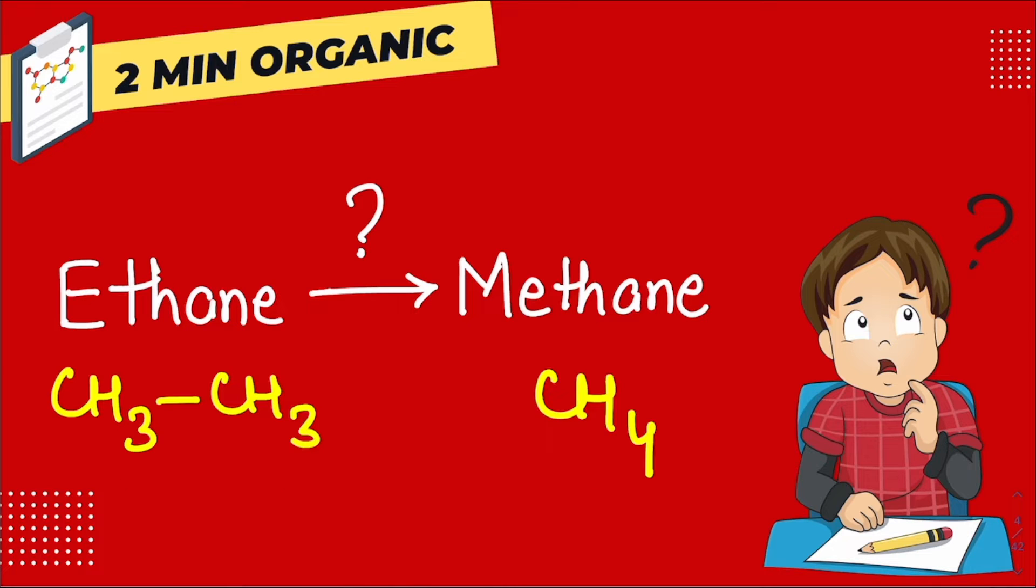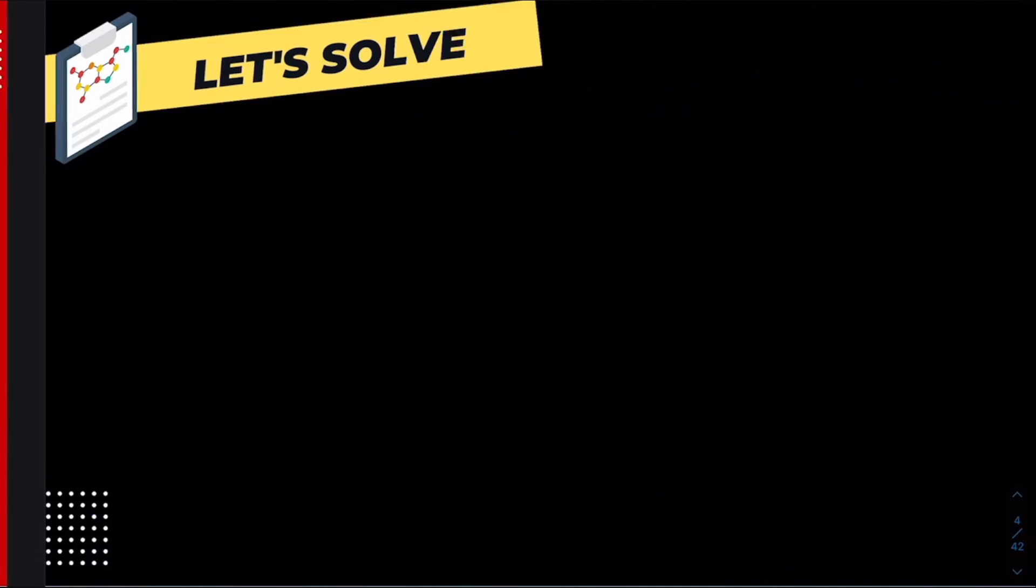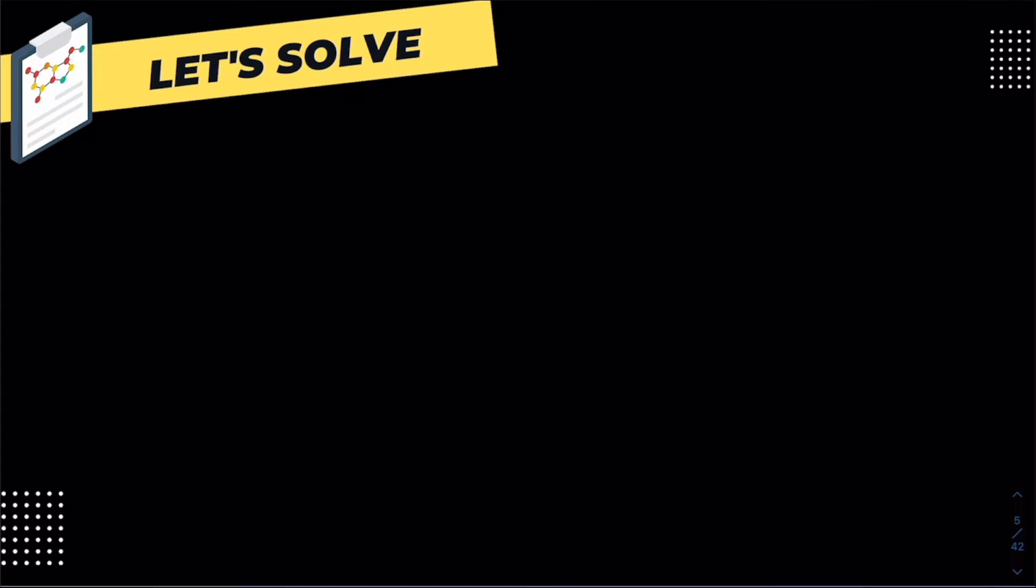It seems like a pretty simple question - how to convert ethane to methane - but in this case, you have to reduce the number of carbons in the chain. When you have to reduce the number of carbons in the chain, there are limited options available.